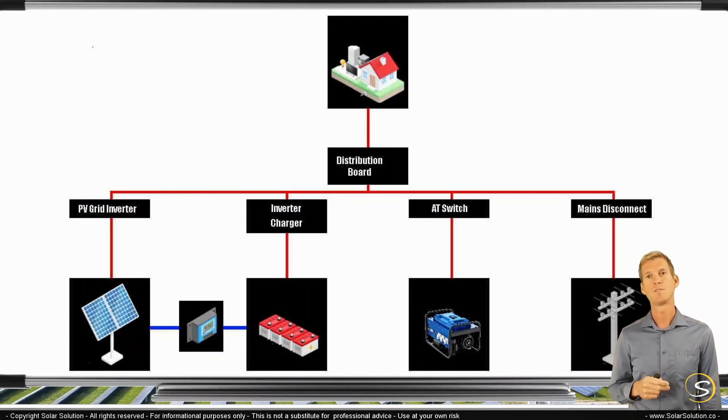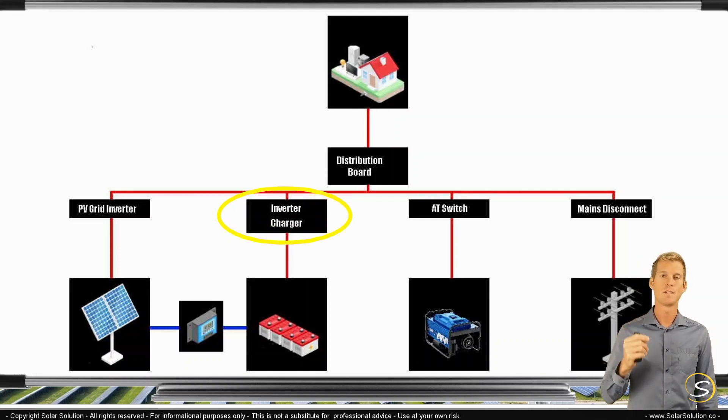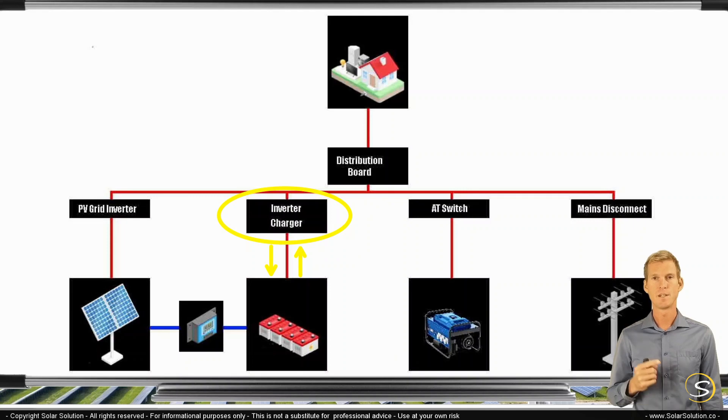Then the second component is your inverter charger. You know by now as well what an inverter charger is and what it does. So either way, it's inverting. So it's taking the DC power from your batteries and turning it into AC power. Or it's charging batteries and it's taking AC power from your local AC grid, turning it into DC and charging your batteries. So that's your inverter charger.